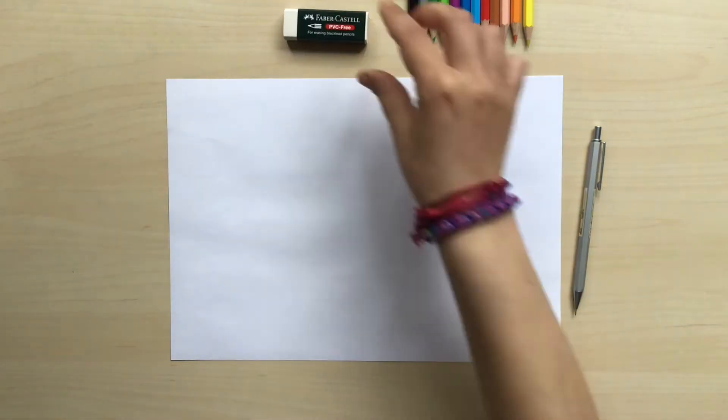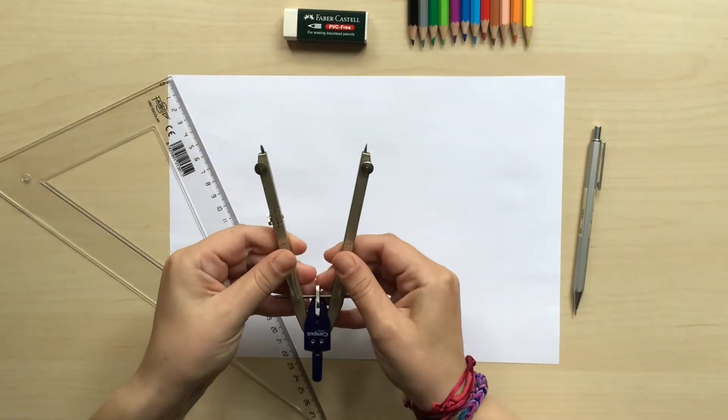We're gonna need a normal piece of paper, a pencil, an eraser, a square set and of course a compass.